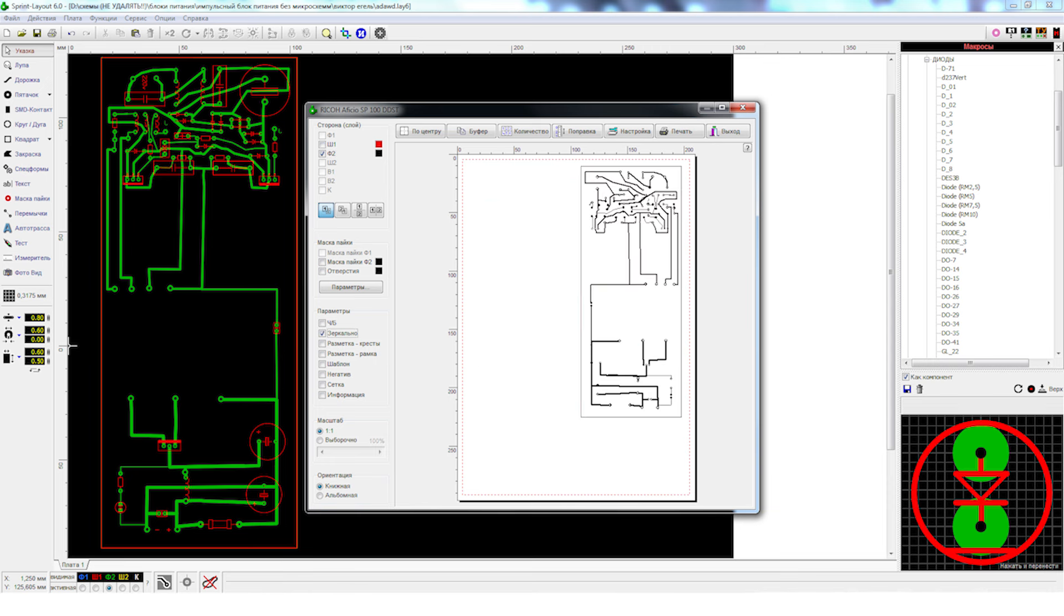Then go back to the print menu. Check the F2 box to display only the board tracks and check the mirror checkbox so that the tracks are reflected. Then print it again.